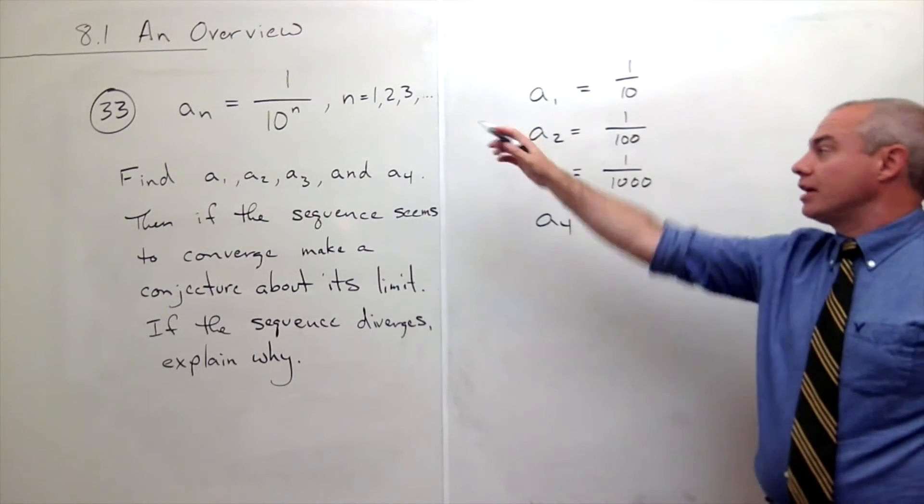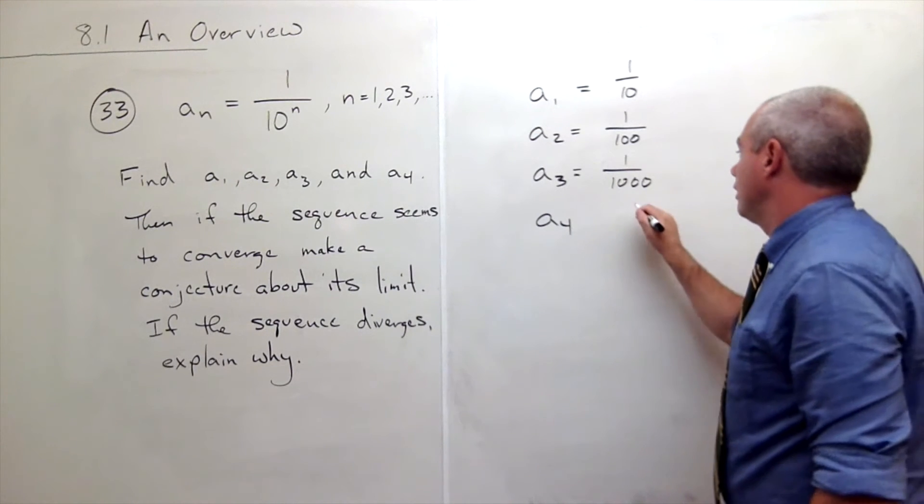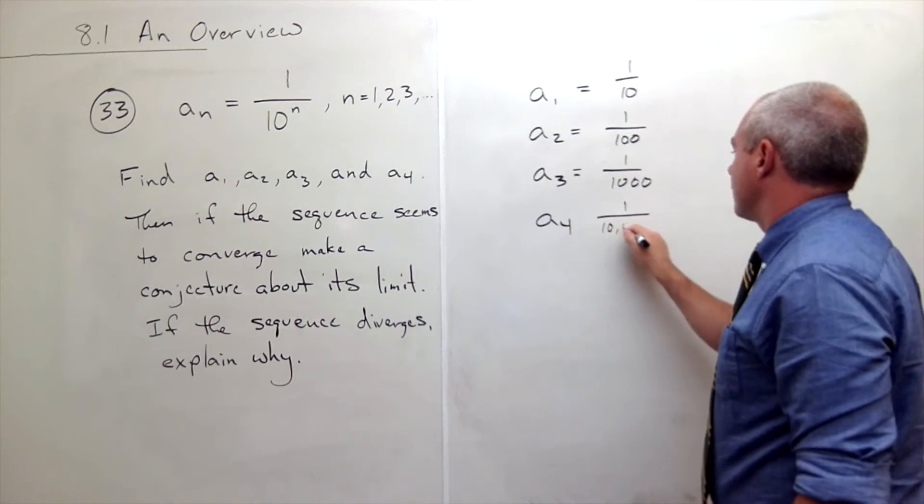And then finally, I plug in 4 for n and I get 1 over 10 to the fourth, or 1 over 10,000.